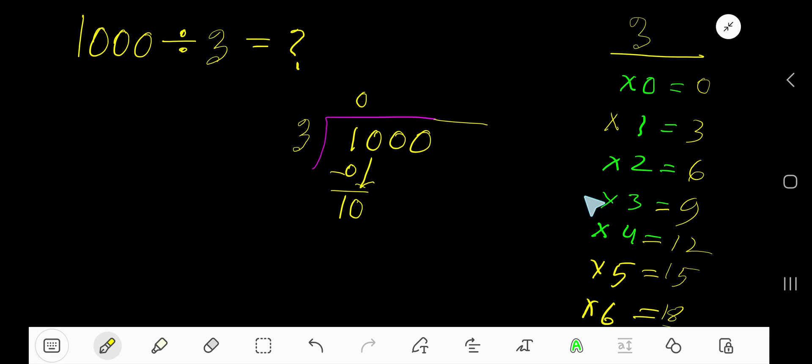3 goes into 10 how many times? 4 times would be 12, which is greater, so 3 times. 3 times 3 is 9. Subtract, you're getting 1. Bring down the next 0.